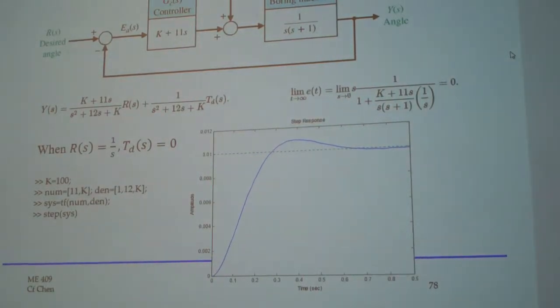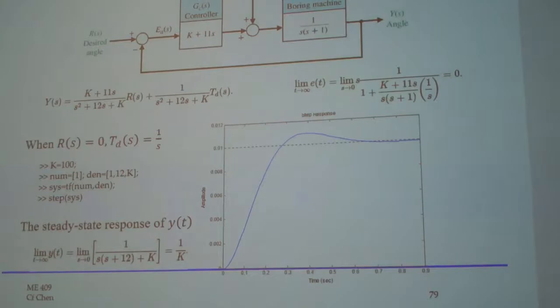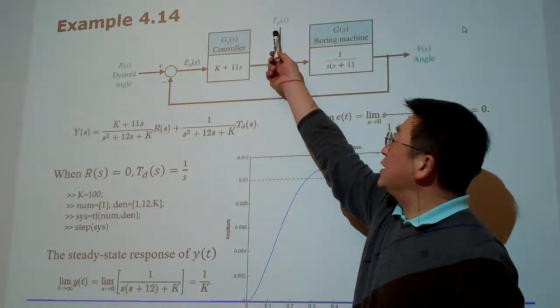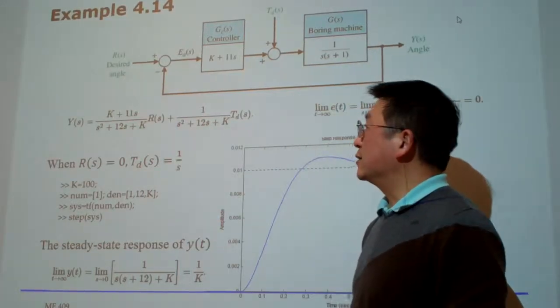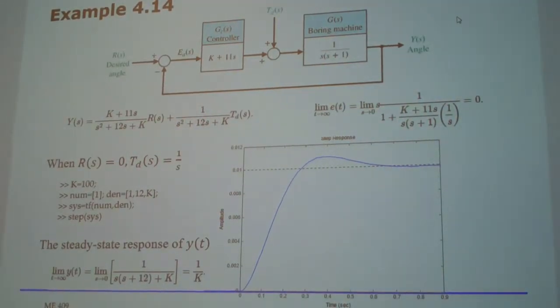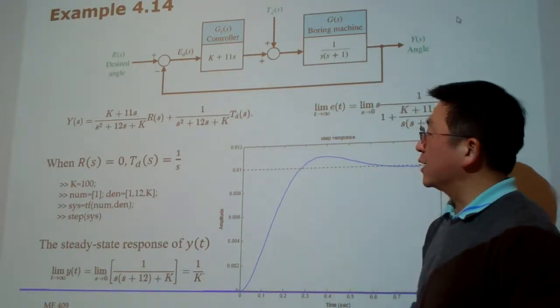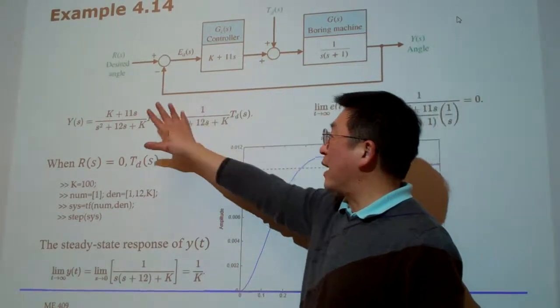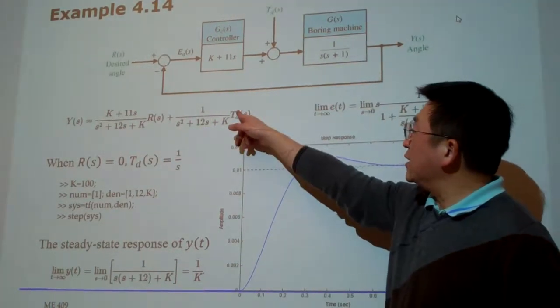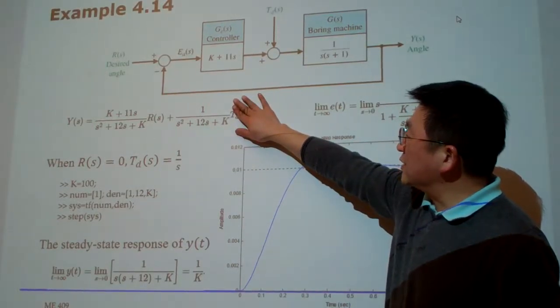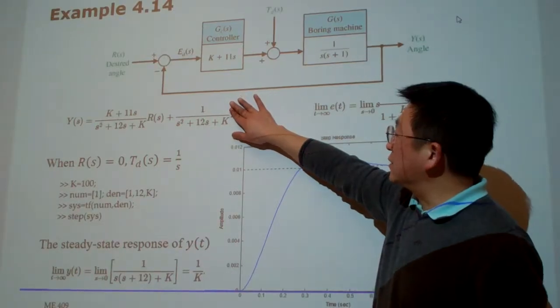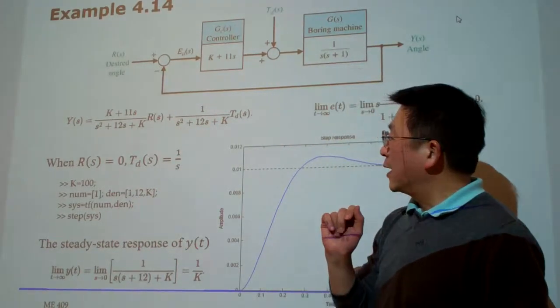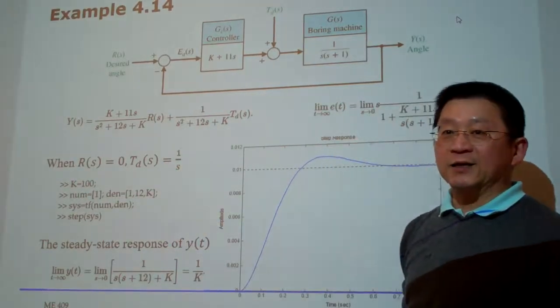For the second slide, we want to know the influence of the TD to the system by not considering the demand input here. So assuming the disturbance is the unit step input, then we not consider the first term, we consider the second term. Maybe in your slide you can block out this one. So when TD equal to 1 over S, using the syntax of the step command, the system describes the numerator should be equal to 1. The denominator is 1, 12, K, 1, 12, K. For this case, we choose K equal to 100, the same as the previous slide I forgot to mention. So that's a curve like this.